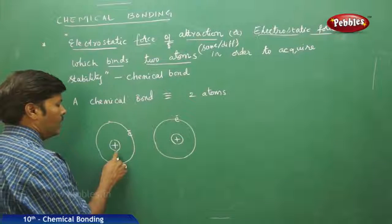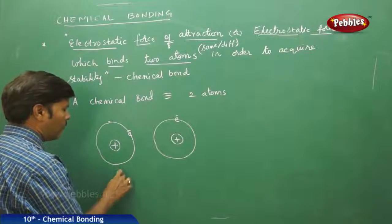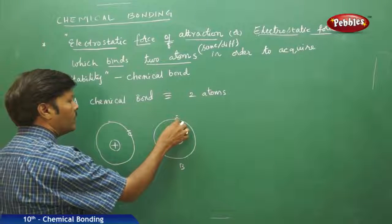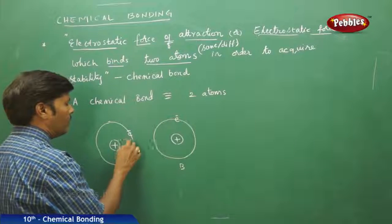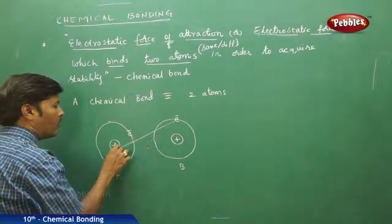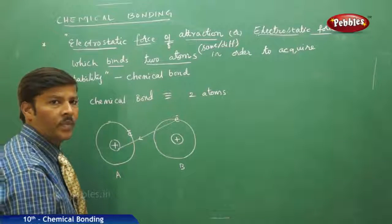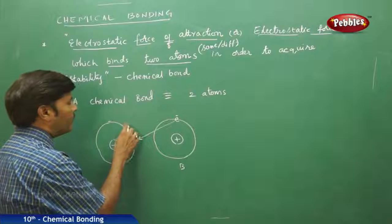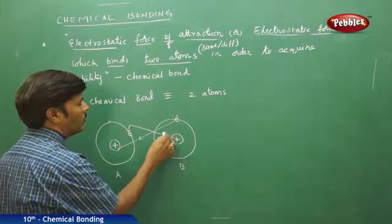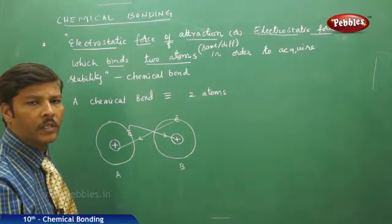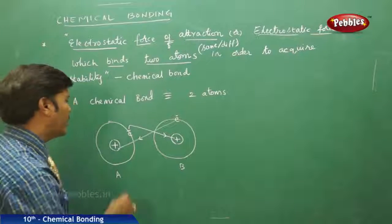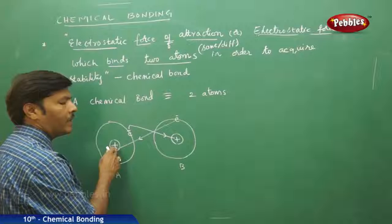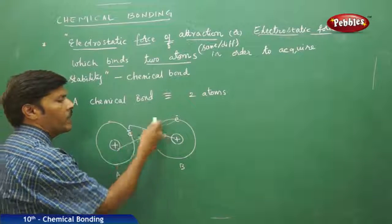So here, if these are the two atoms — this is atom A and this is atom B — the electron of the second atom will try to attract; the electrostatic force of attraction operates between the electron of the second atom and the nucleus of the first atom. Again, the electron of the first atom and the nucleus of the second atom also have an electrostatic force of attraction operating between them.